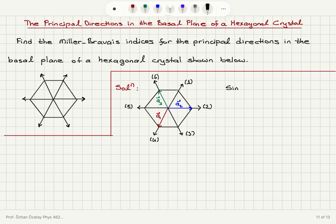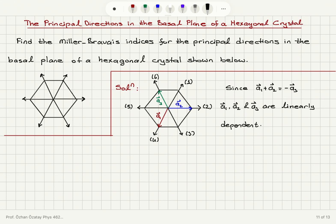We have the following relationship between these vectors: a1 plus a2 is equal to minus a3, meaning a1, a2, and a3 are linearly dependent. Therefore, normally it would be enough to use two basis vectors to find points on this lattice, but we are using three basis vectors in order to define our three-index notation.